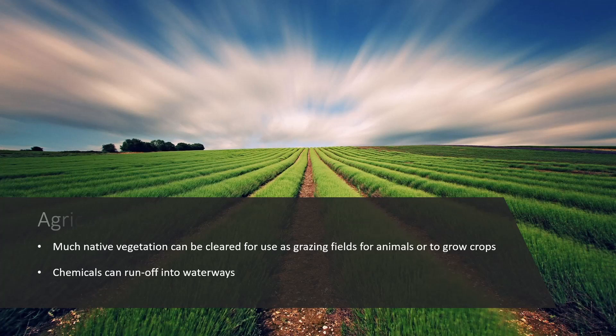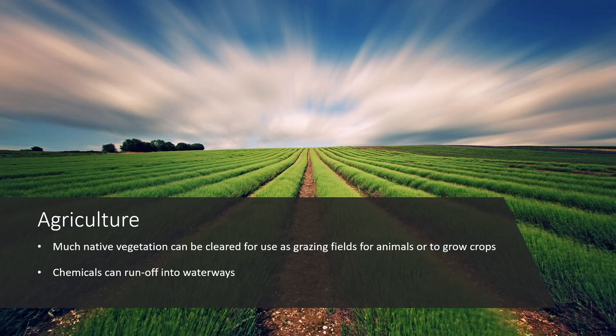Agriculture. With agriculture, much native vegetation can be cleared for use as grazing fields or to grow other crops. If areas chosen aren't already occupied by native wildlife, that is preferable. Chemicals — things like pesticides and fertilizers — can also run off into waterways.